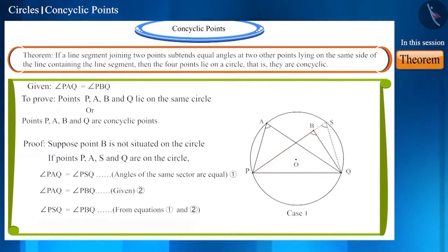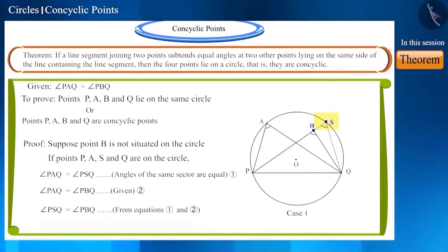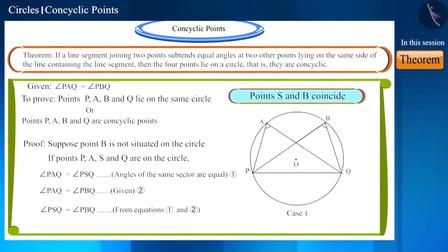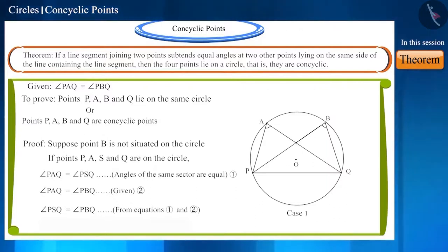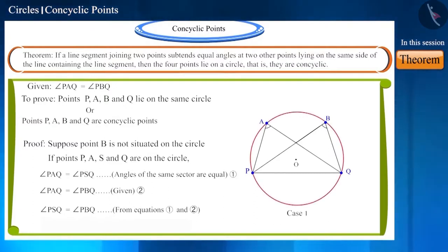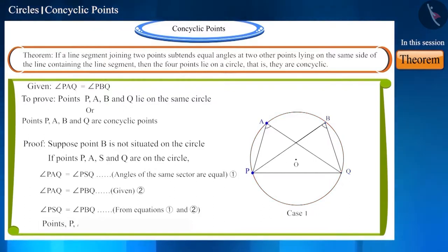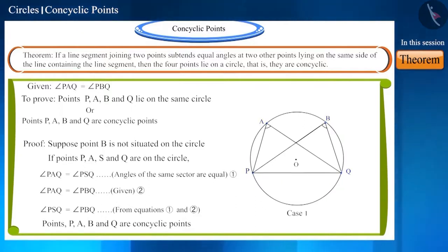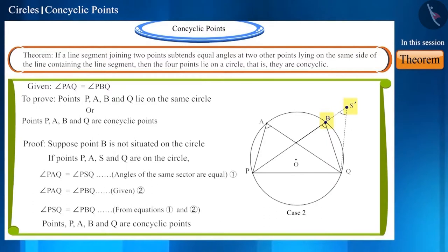This is possible only when the two points S and B coincide — that is, they are one and the same point. Therefore, we can say that point B is situated on the circle passing through points P, A, and Q. So the four points P, A, B, and Q are concyclic. Similarly, point S-dash will also be coincident with point B.